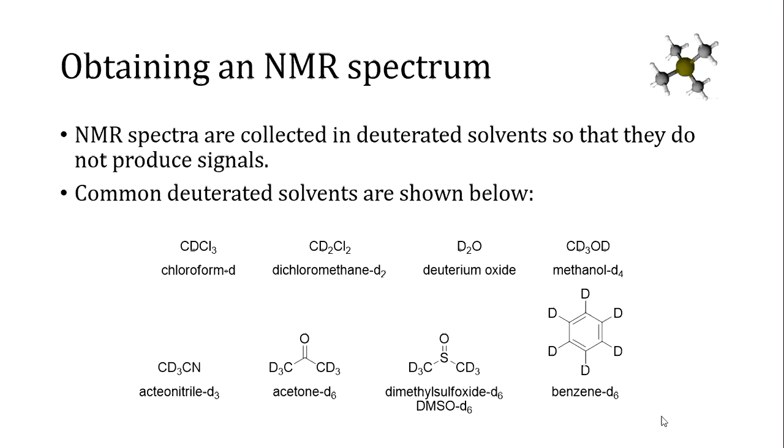We represent deuterium with the letter d when it's incorporated in the chemical structure. Some common deuterated solvents which contain no hydrogen atoms in their structure are chloroform-d, dichloromethane-d2. You see that the suffix or the end of the name describes how many deuterium atoms are in the structure. Deuterium oxide, the deuterated version of water, methanol, acetonitrile, acetone, dimethyl sulfoxide, benzene, etc. There are many, many other deuterated solvents available for specialty purposes for NMR spectroscopy. We use deuterated solvents so that we don't see signals from the solvent, which is good.